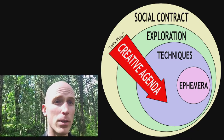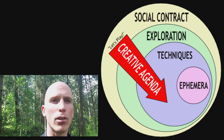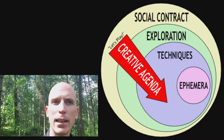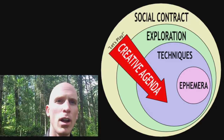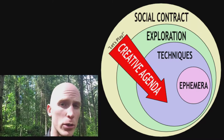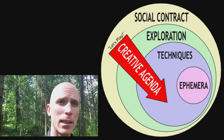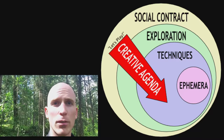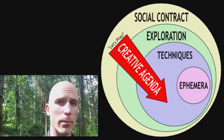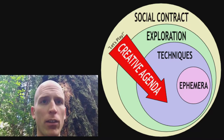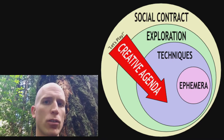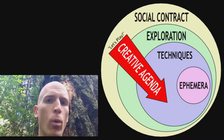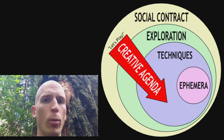Moving in a little further, we have techniques. This is how elements are introduced by the fiction. There can be many techniques, and a technique is really just a group of ephemera taken together. A system is the collection of techniques that you are using within your game. Ephemera lies within techniques — this is the actions or statements during the play of the game, literally what we do or say while we play role-playing games.